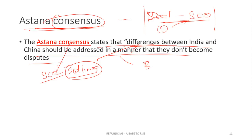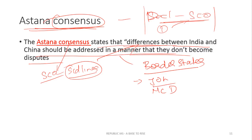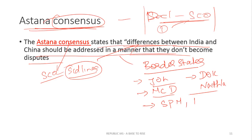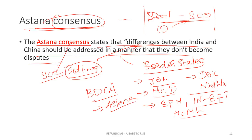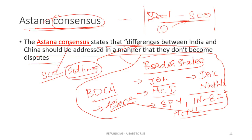From a UPSC prelims perspective, you need to know: what are the states that border China, the Johnson line, the McCartney-McDonald line, the Doklam Standoff, Nathula Pass, Chumbi Valley, the Doklam region, Special Representative Meets, the India-Bhutan Friendship Treaty, the McMahon line, the Border Defense Cooperation Agreement, and the Astana Consensus — these are all key points related to India-China border disputes.